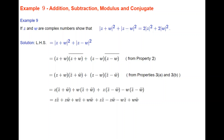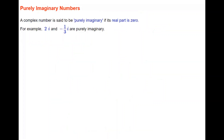We're left with 2·Z·Z̄ + 2·W·W̄, and using property 2 again, that is just 2|Z|² + 2|W|², which is the right-hand side. The property is proved.